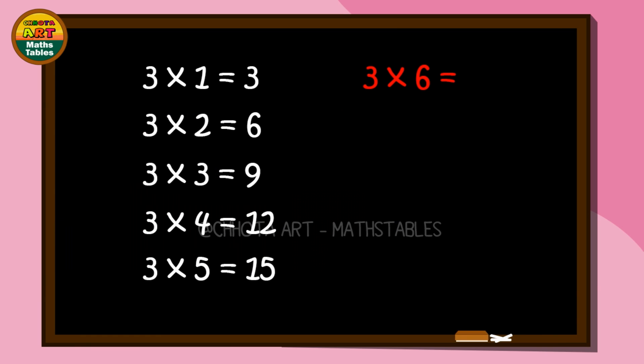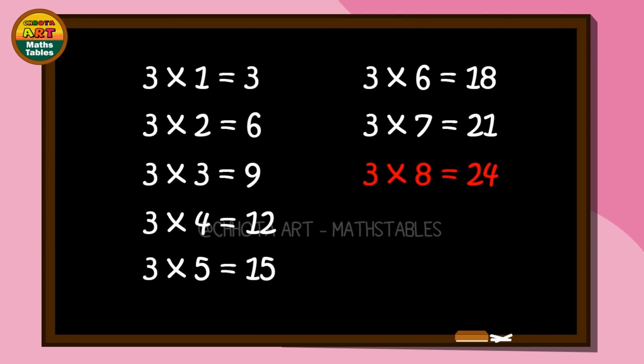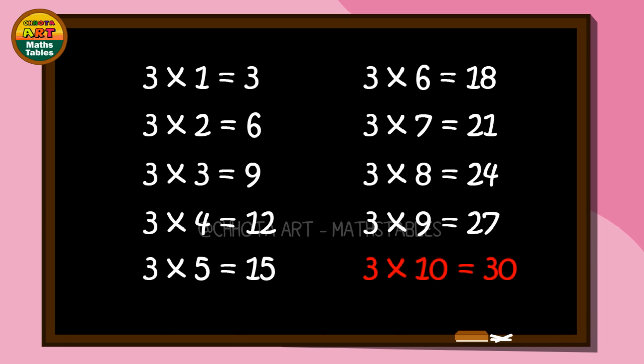3 sixes are 18. 3 sevens are 21. 3 eights are 24. 3 nines are 27. 3 tens are 30.